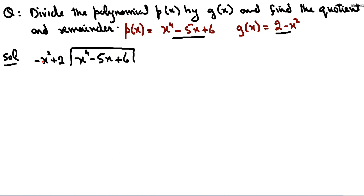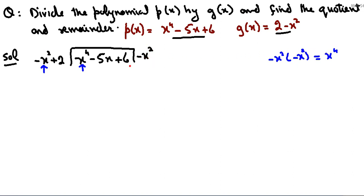Degrees decreasing order में लिखते हैं। First term of divisor है −x², और first term of dividend है x⁴। इन दो की तरफ ध्यान देना है। −x² को क्या multiply करें कि वो x⁴ बने? Powers add होती हैं: 2 + 2 = 4। यह minus है, तो minus × minus = plus, so −x² × −x² = +x⁴।